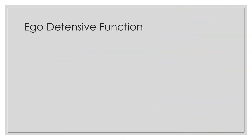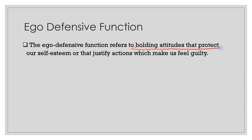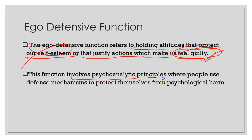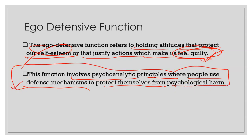Let's talk about the second function: the ego defensive function. It refers to holding attitudes that protect our self-esteem or that justify actions that make us feel guilty. Whenever we do something that we believe could be wrong, we have the feeling of guilt, and this function helps protect yourself from that feeling. It also protects your self-esteem. This function involves psychoanalytical principles where people use defense mechanisms to protect themselves from psychological harm — such as projection, denial, and avoidance.